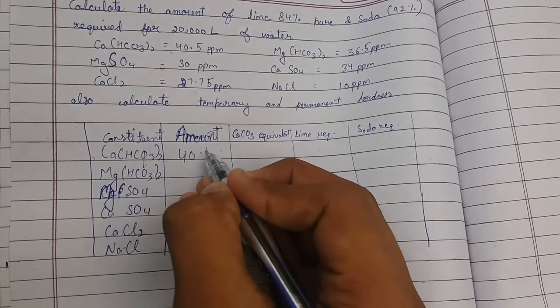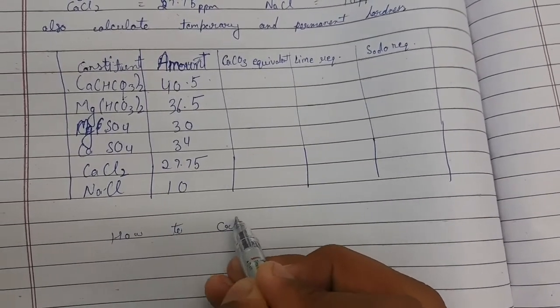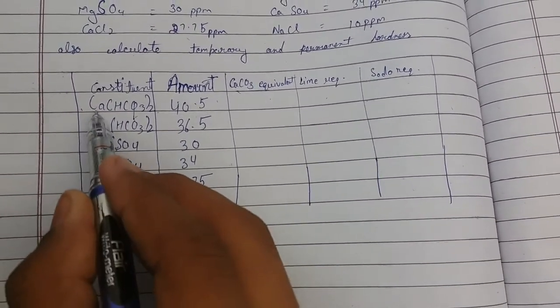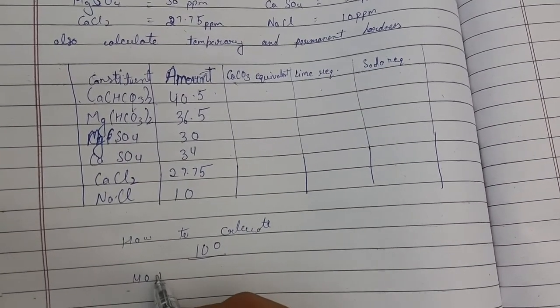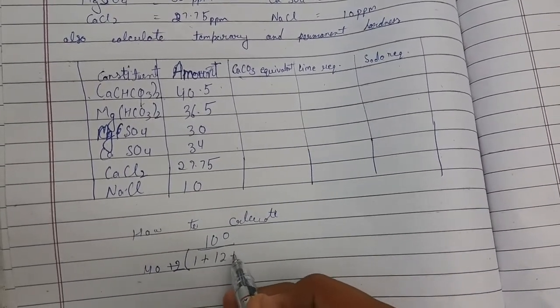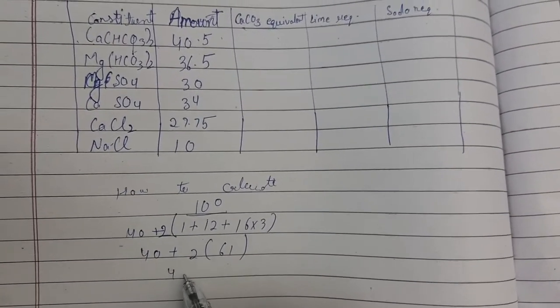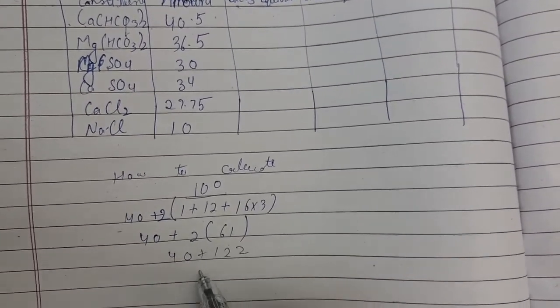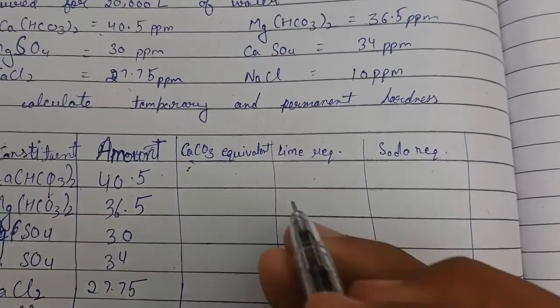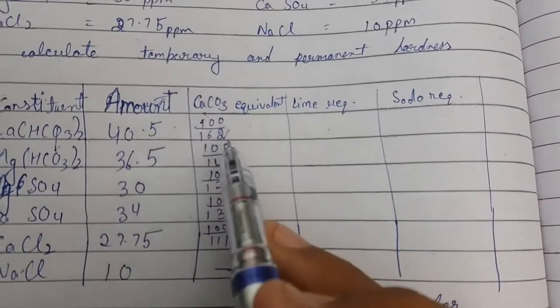Now I will write all the constituents. Now comes the amount. I will write the amount present in the question. Now the question is how to calculate CaCO3 equivalent. It is very simple. We have to add the molecular mass of all the compounds present. For example, calcium 40 plus hydrogen - because HCO3 has two times it will be multiplied two times - and it becomes 162.